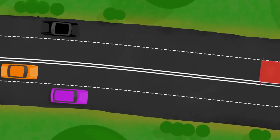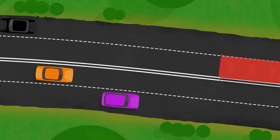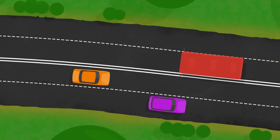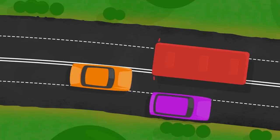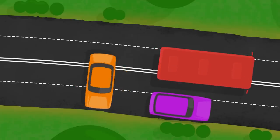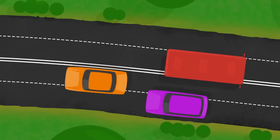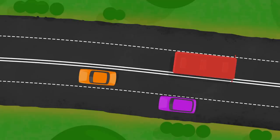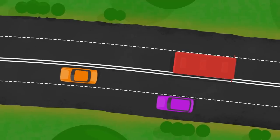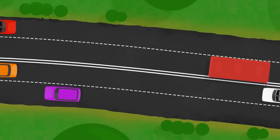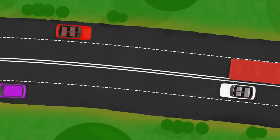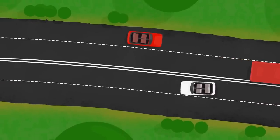In many countries, cars drive on the right side of the road. But in England, it's different. There, the vehicles drive on the left side. And before crossing the street, you need to look to the right to see them.